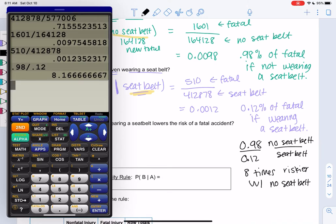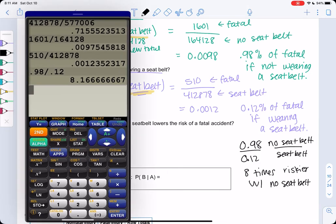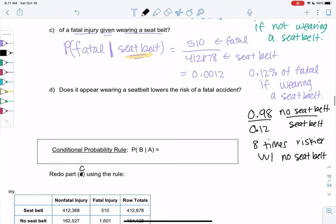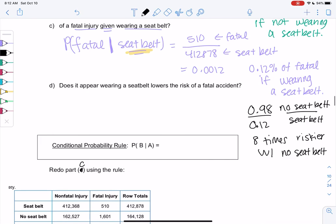Because it's eight times bigger, the percent chance. You've probably heard this before, like with seatbelts or maybe cigarettes, like it's 10 times more fatal or 10 times riskier. They're finding the risk and comparing it. Does wearing a seatbelt lower the risk? Yeah, it's eight times riskier without a seatbelt. So yes, wearing a seatbelt lowers your risk.